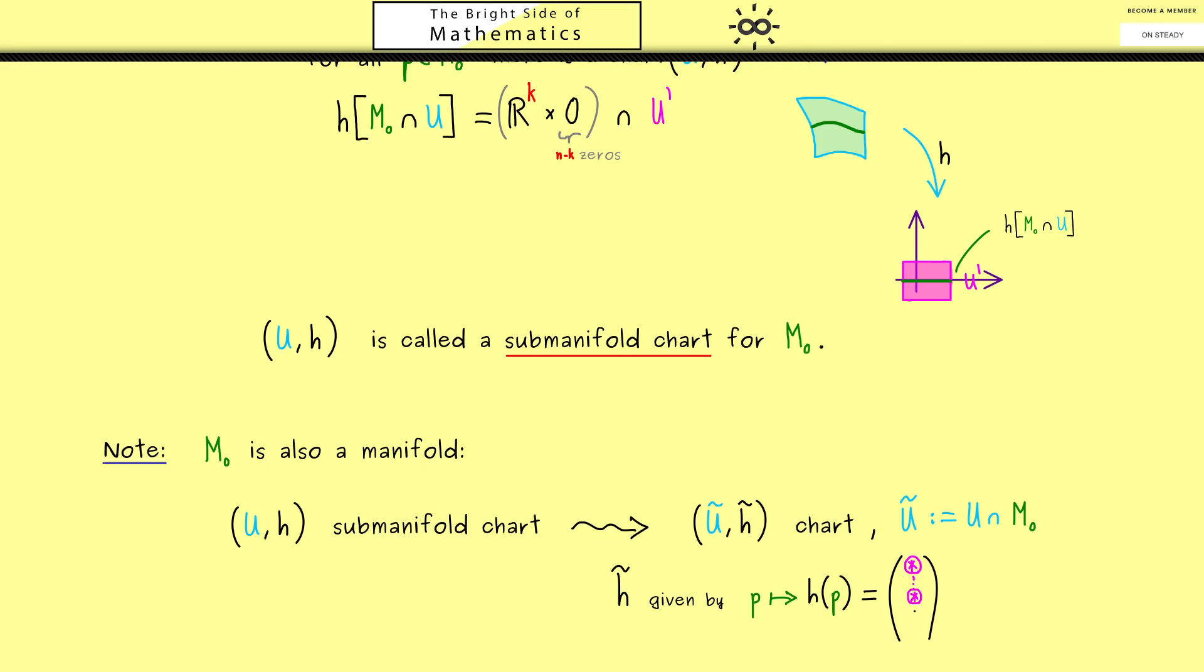In other words, we have a vector with n components, where k are important, and then we have n-k zeros. And then the idea is to forget about the zeros and map this thing into R^k.